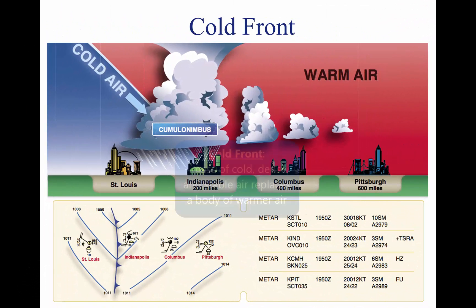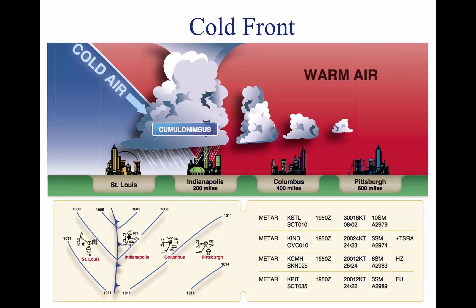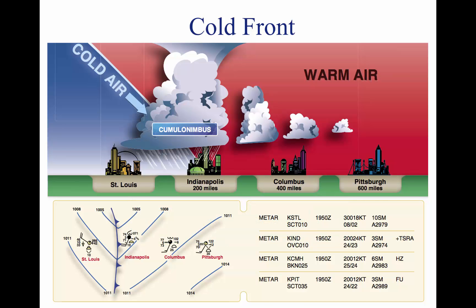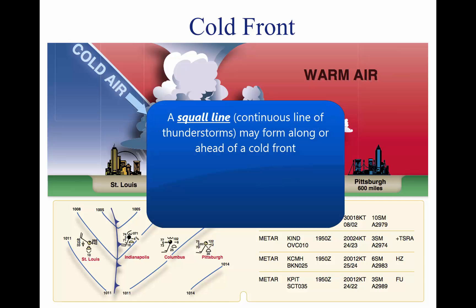A cold front occurs when a mass of cold, dense, and stable air advances and replaces a body of warmer air. Cold fronts move more rapidly than warm fronts, progressing at a rate of 25 to 30 miles an hour. A typical cold front moves in a manner opposite that of a warm front — it is so dense it stays close to the ground and acts like a snow plow, sliding under the warm air and forcing the less dense air aloft. The rapidly ascending air causes the temperature to decrease suddenly, forcing the creation of clouds. The friction between the ground and the cold front retards the movement of the front, creating a steeper frontal surface. This results in a very narrow band of weather concentrated along the leading edge of the front, and a continuous line of thunderstorms, or squall line, may form along or ahead of the front.